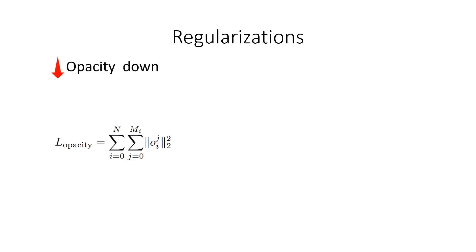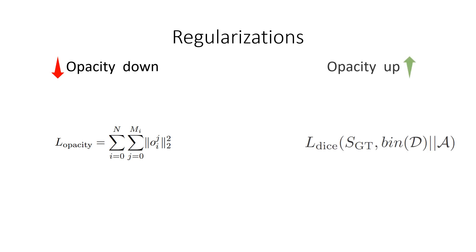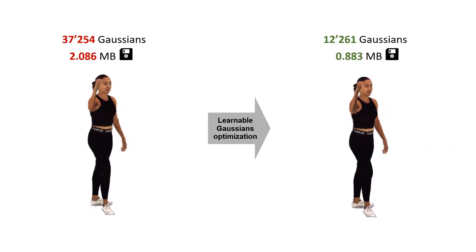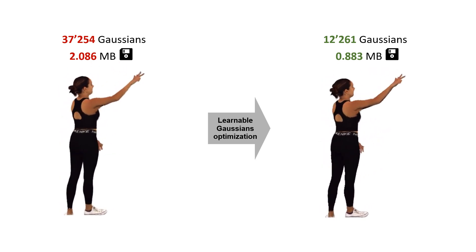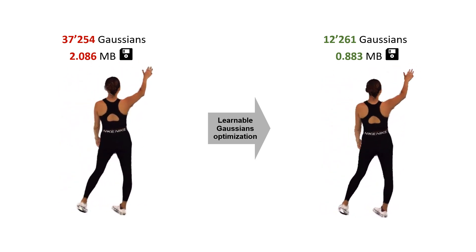We use two regularizations to encourage optimization to find a trade-off between Gaussian amount and image quality. One reduces the transparency of Gaussians to remove as many as possible, while the second preserves Gaussians with a segmentation dice loss. Using both allows us to remove only unnecessary Gaussians. As a result, we reduced the number of Gaussians up to three times for the whole avatar, resulting in more than two times reduced storage costs.